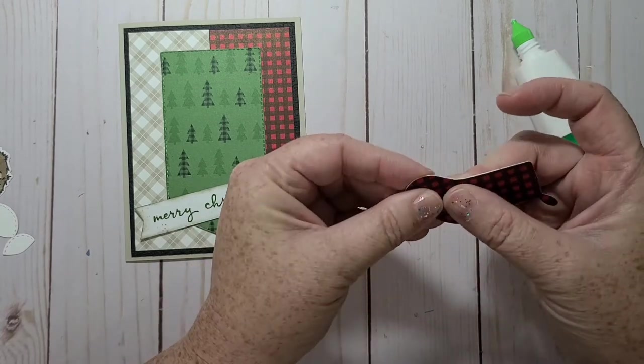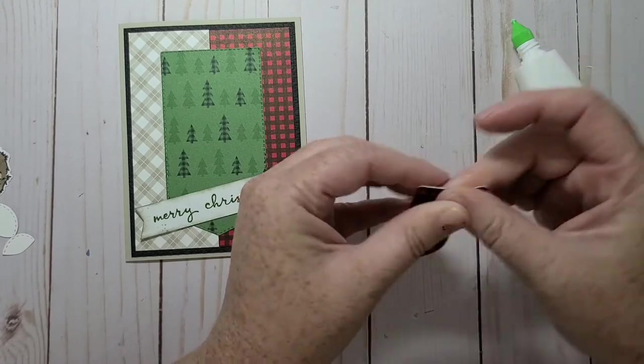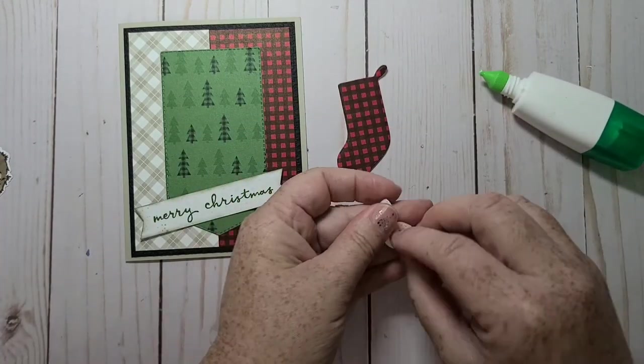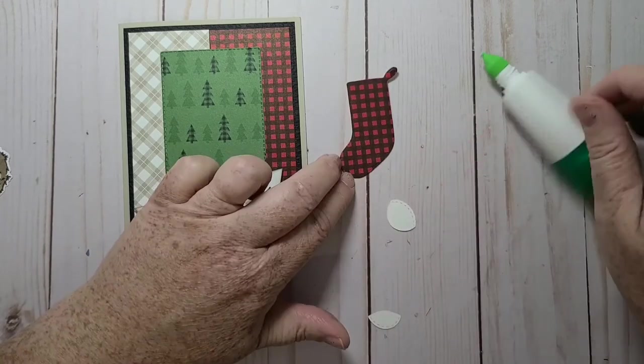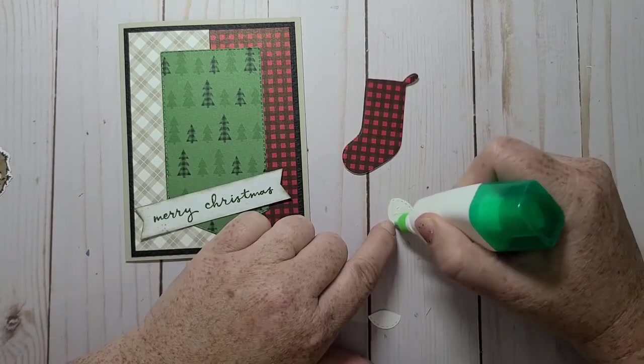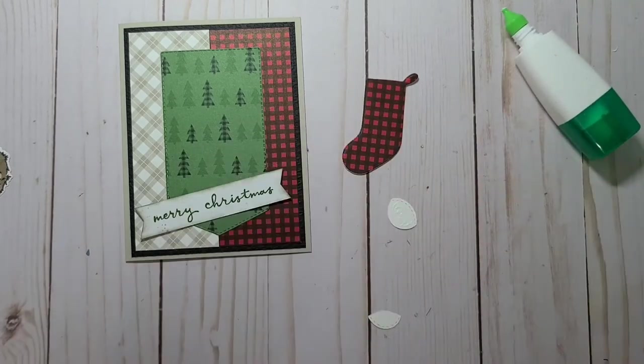Because I find the DSP on its own, it's just not sturdy enough. So I like to layer up my die cuts, and then we'll add the little heel and toe, which is so cute. Oh, I need my tweezers.